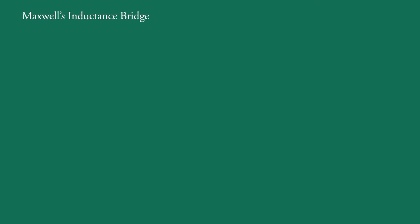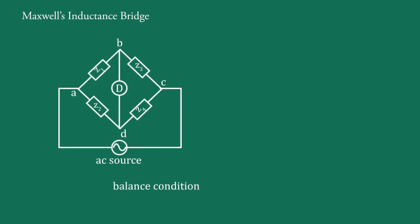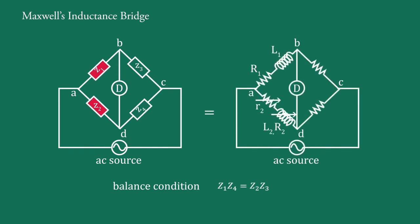This video covers Maxwell's inductance bridge, which is used to measure the self-inductance of a given inductor. We have been studying the basic bridge balance condition in previous videos. The basic AC bridge balance condition is given as Z1·Z4 = Z2·Z3. If we replace the components Z1, Z2, Z3, and Z4 in the basic bridge with specific elements, a new circuit is formed, known as Maxwell's inductance bridge.